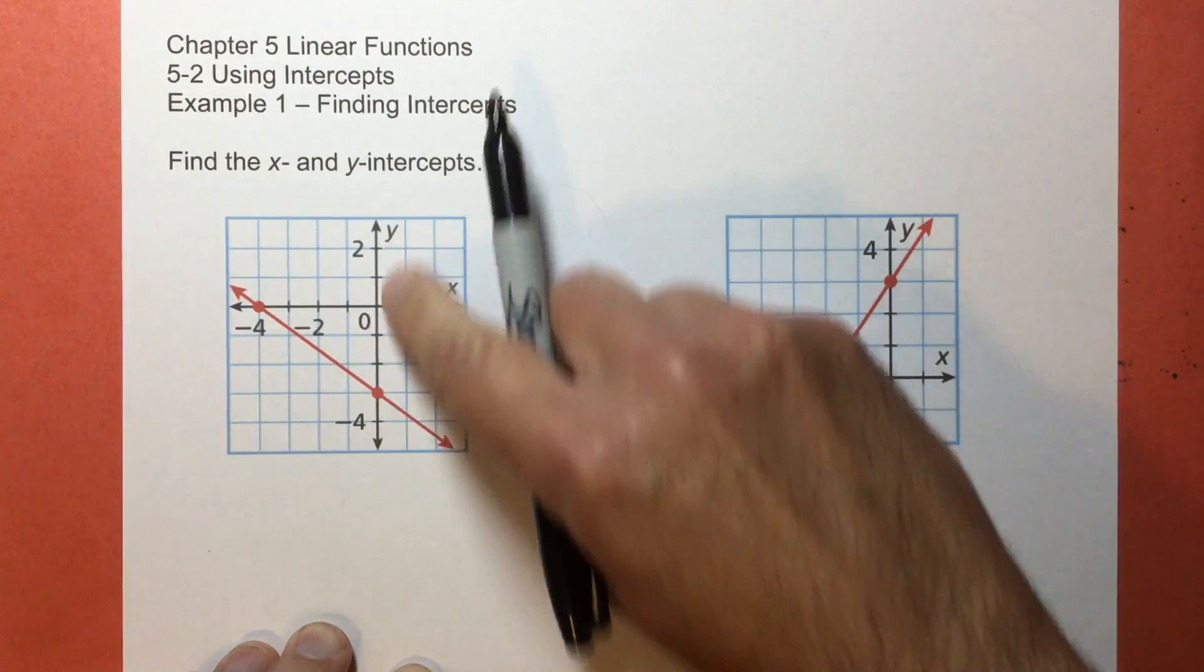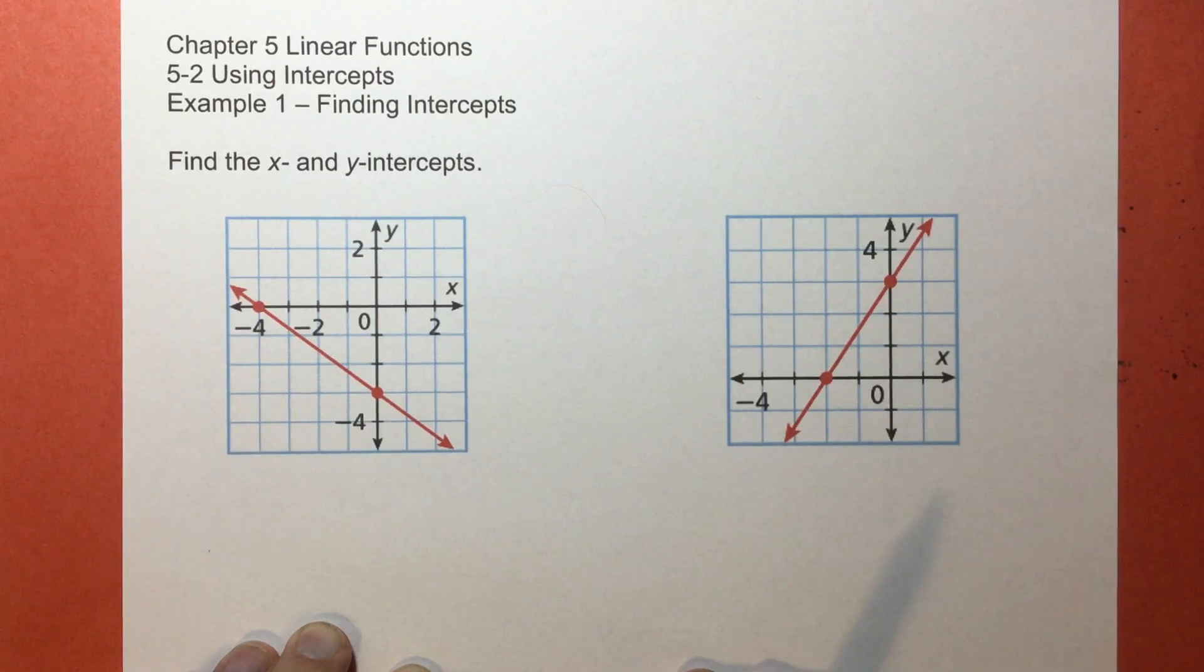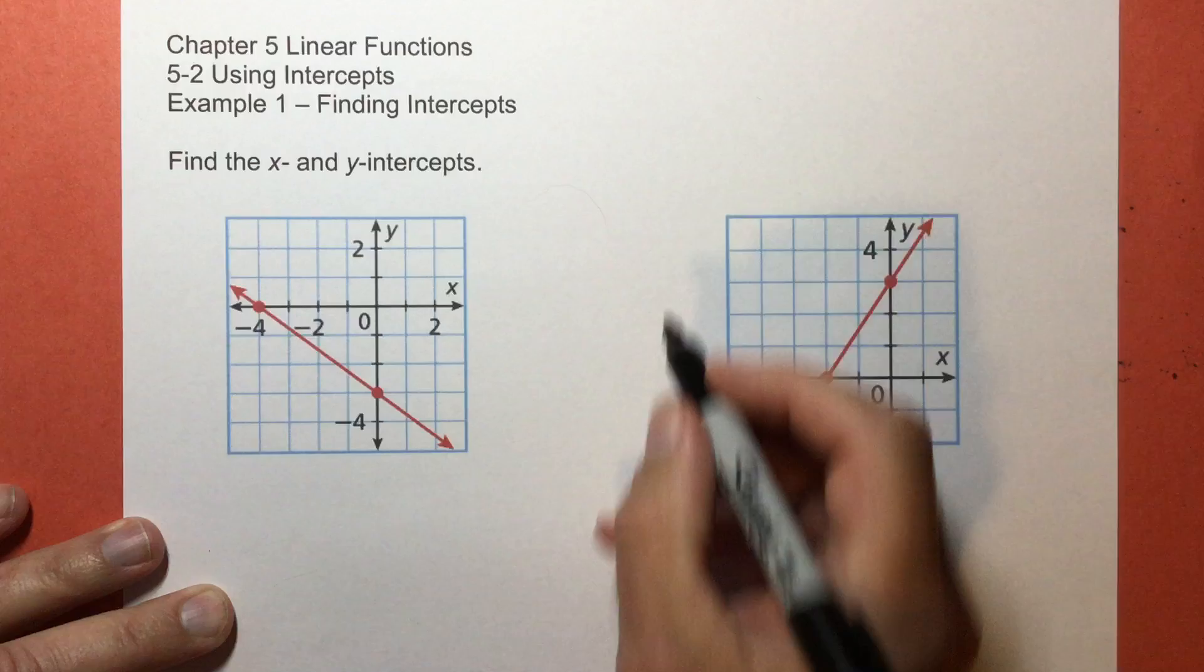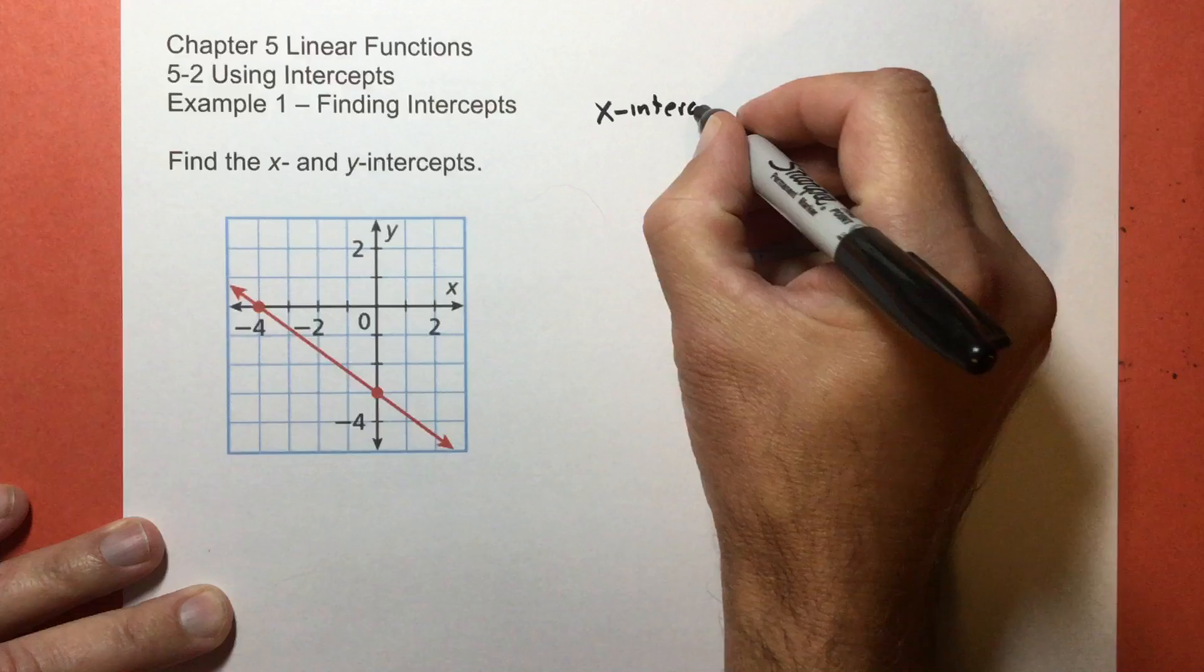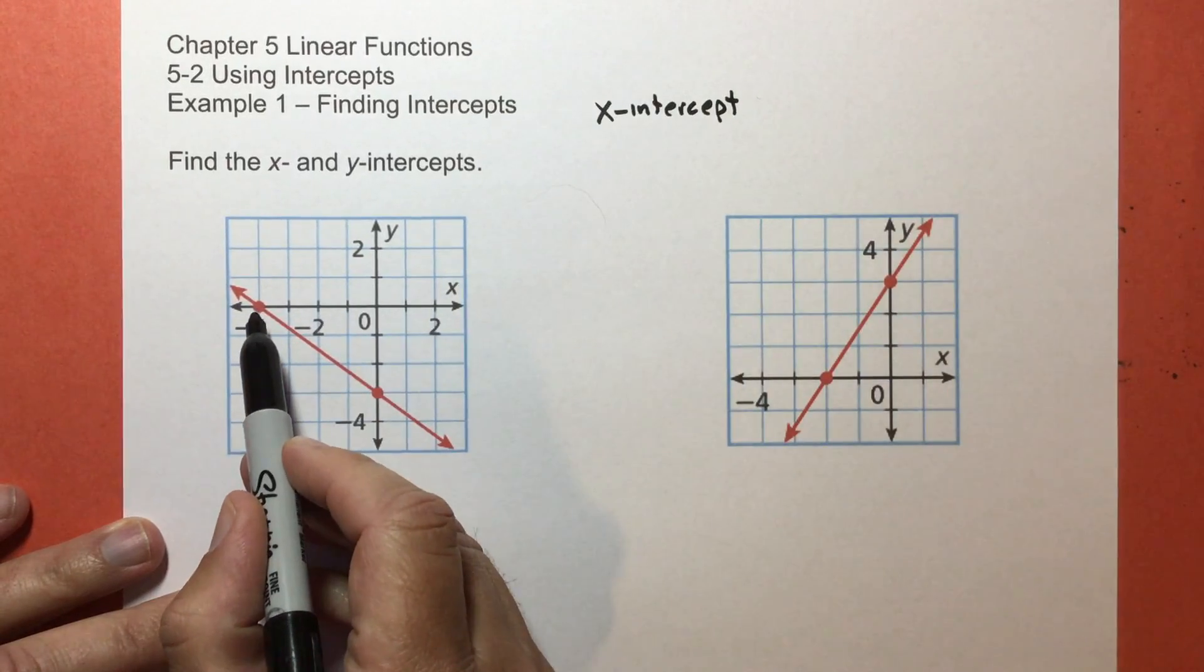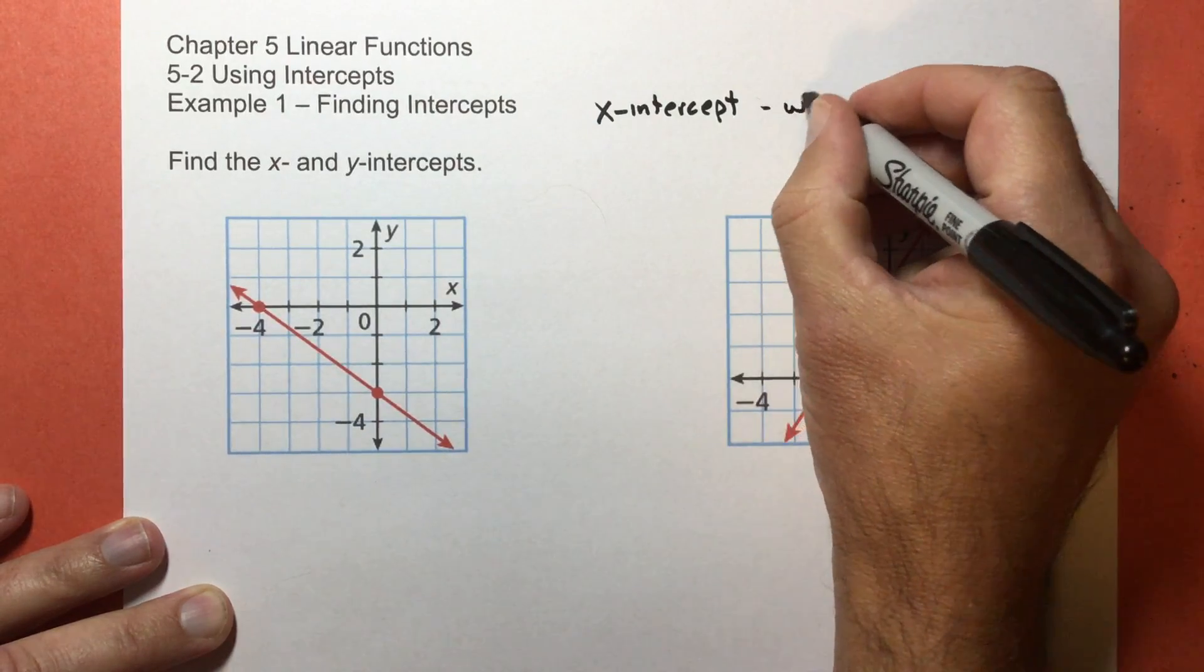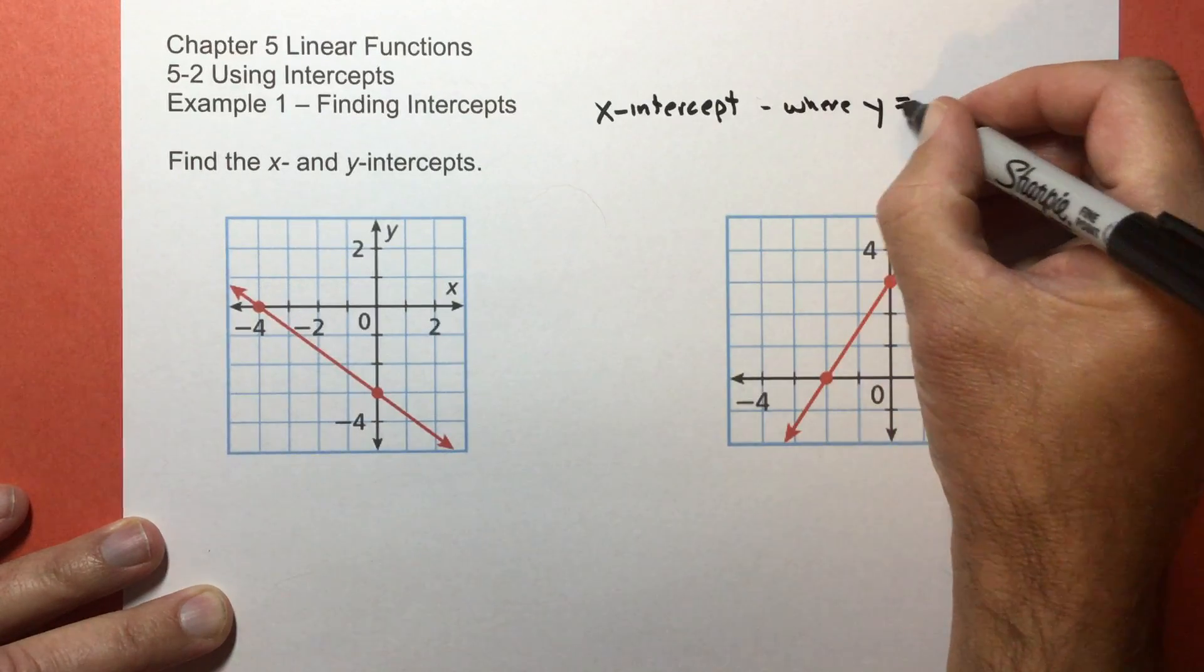Same thing with the y-axis, it's just a number line going vertical instead of horizontal. One thing I want to point out is this, and this is really important. For the x-intercept, and remember this, that's going to be on the x-axis right here for this problem and right here for that problem. This is where the y value of the graph equals zero.